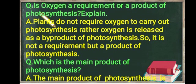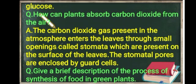The next question is: is oxygen a requirement or a product of photosynthesis? Plants do not require oxygen to carry out photosynthesis; rather, oxygen is released as a by-product of photosynthesis. So it is not a requirement but a product of photosynthesis. The next question: what is the main product of photosynthesis? The main product of photosynthesis is glucose.